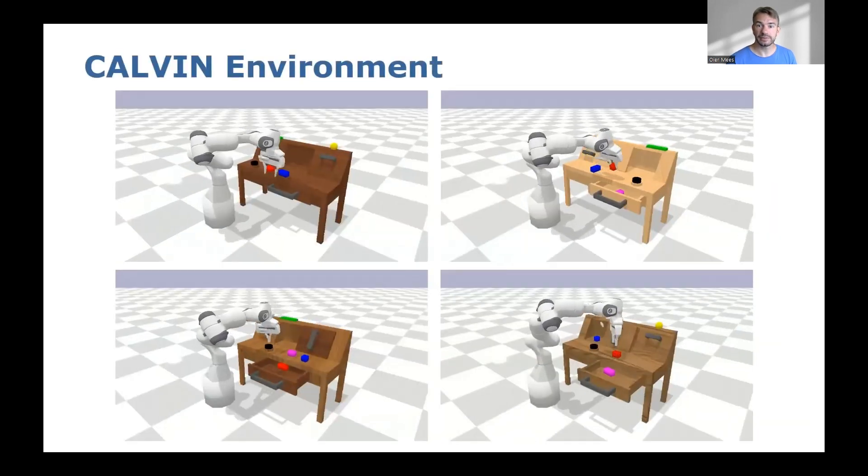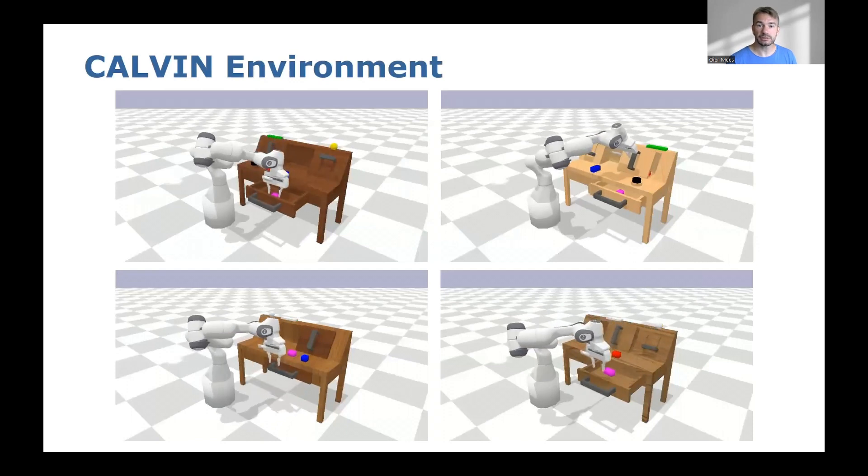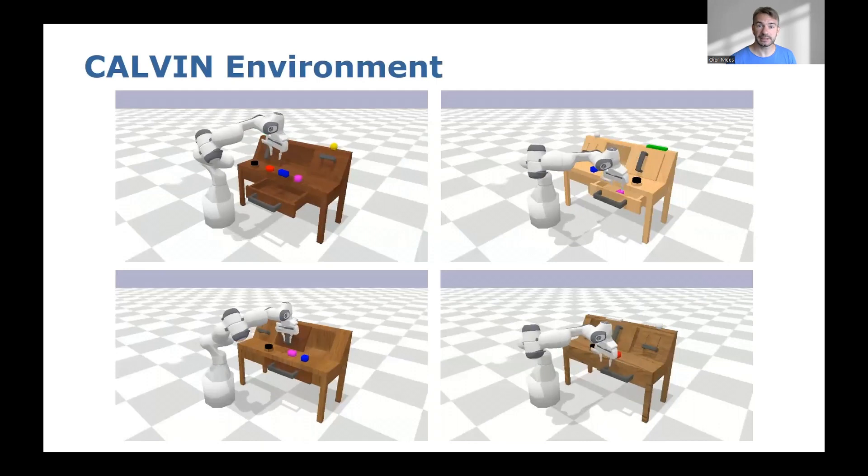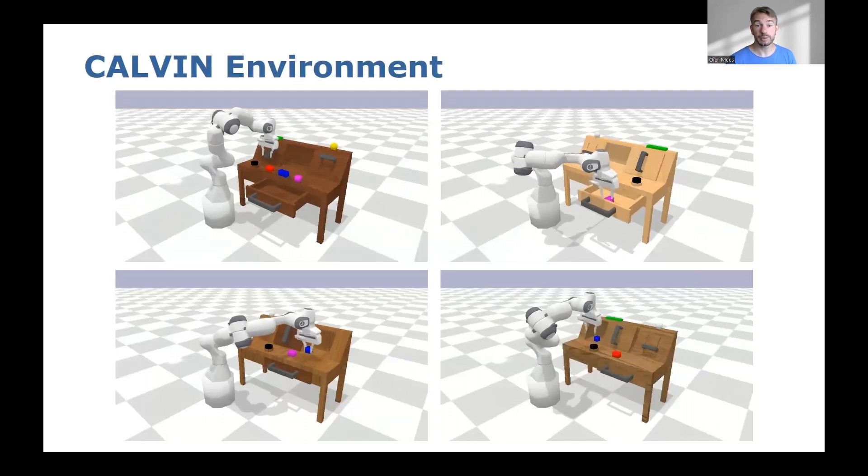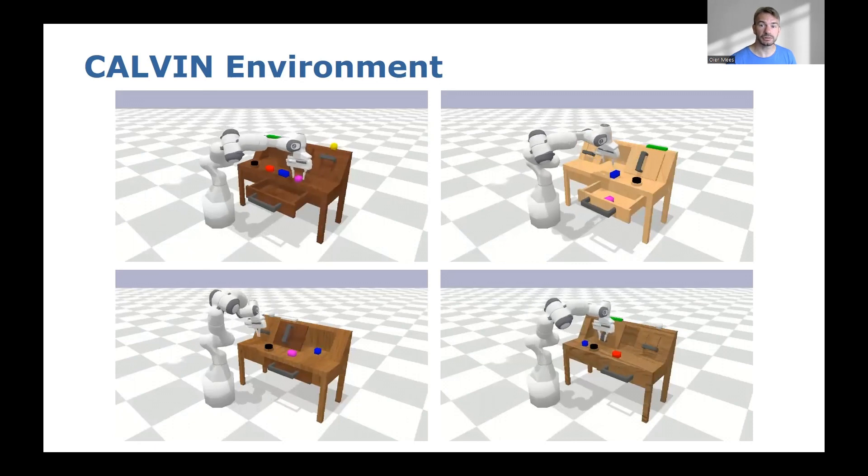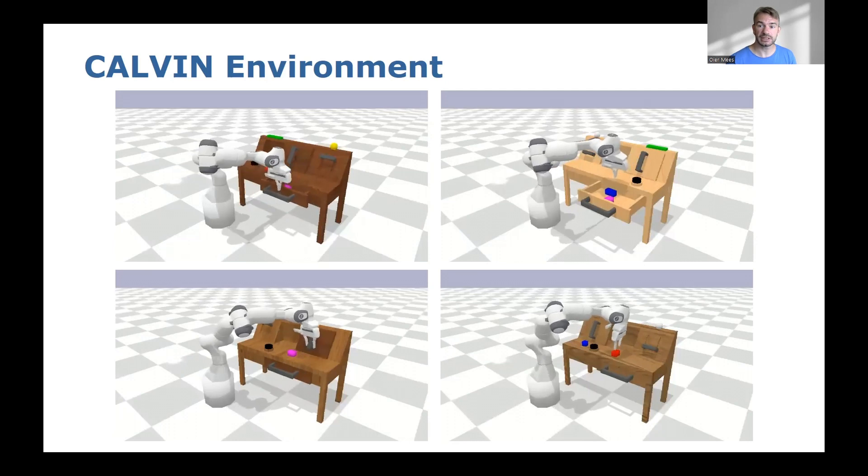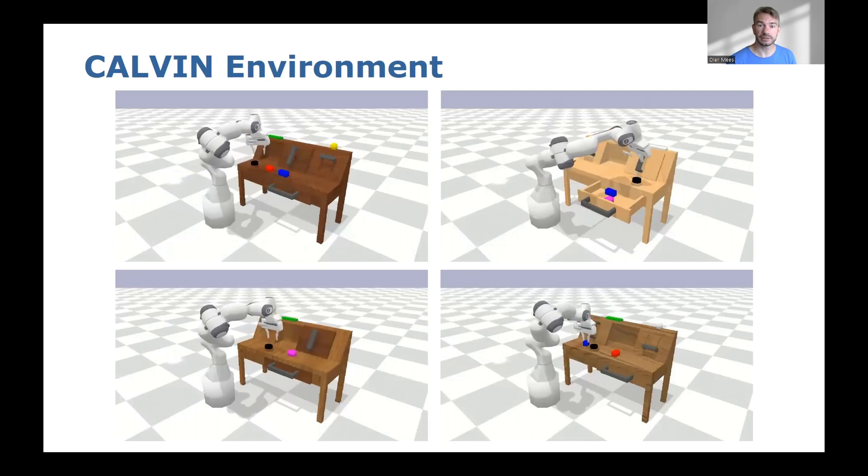CALVIN features four simulated environments with large diversity, so that it can be used for general playing as well as evaluating specific tasks. To better evaluate generalization capabilities of the learned language groundings, all environments have different textures and all static elements are positioned differently.